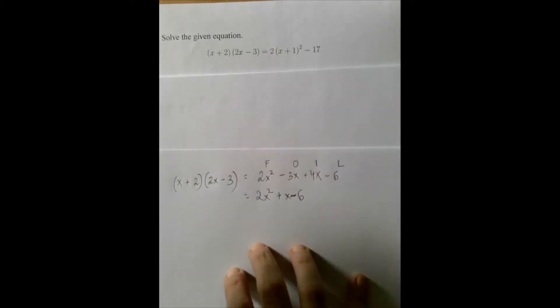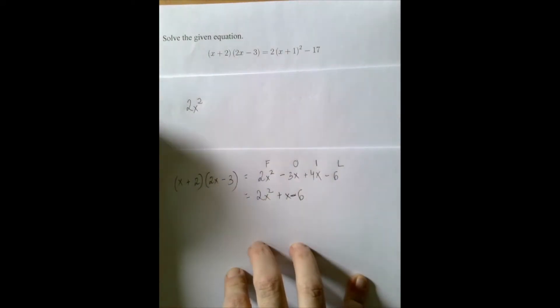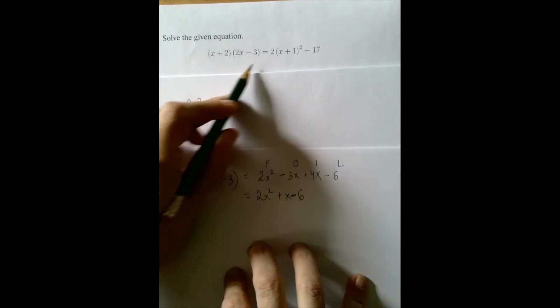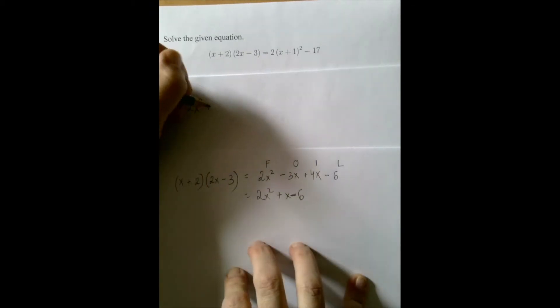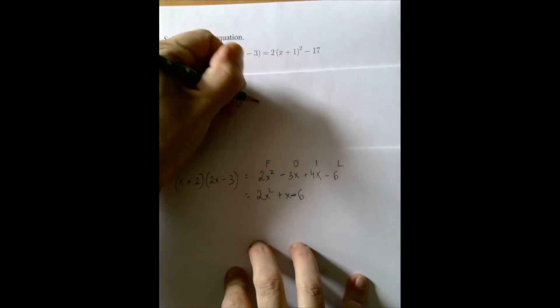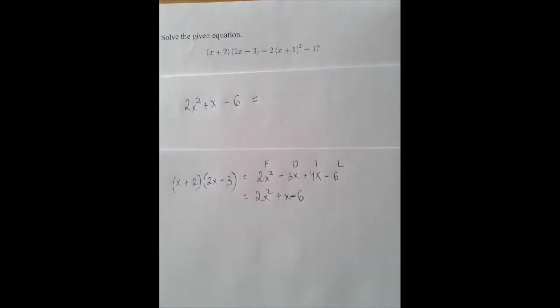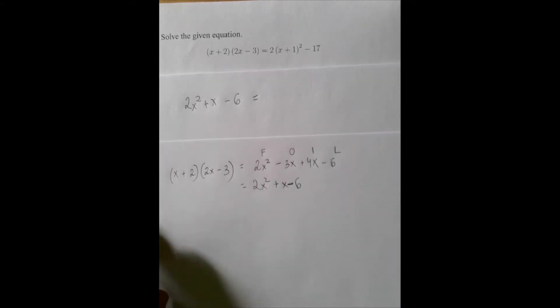And then we would just say, well, we have 2x squared minus 3x plus 4x, that's plus x minus 6. If we still need to write down these computations, it should be margin work, which now I don't have the space in the camera to do.